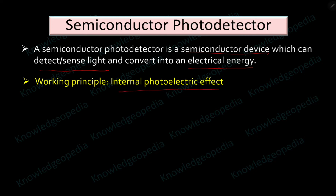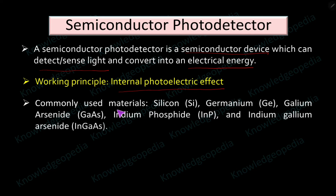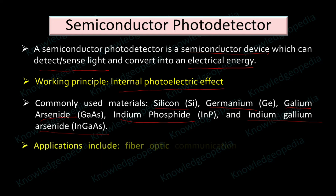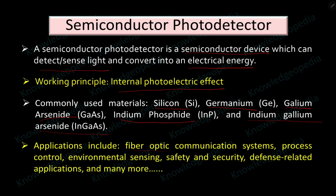The working principle of a semiconductor photo detector is the internal photoelectric effect. The commonly used materials to fabricate semiconductor photo detectors are silicon, germanium, gallium arsenide, indium phosphide, and indium gallium arsenide — though other semiconductor materials can also be used. Applications of semiconductor photo detectors include fiber optic communication systems, process control, environmental sensing, safety and security, defense-related applications, and many more.